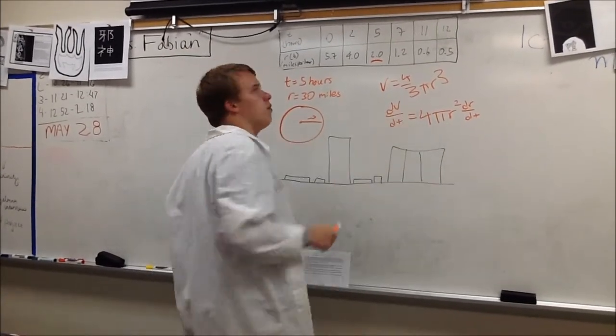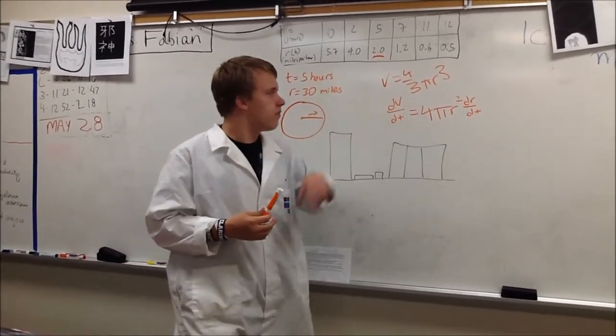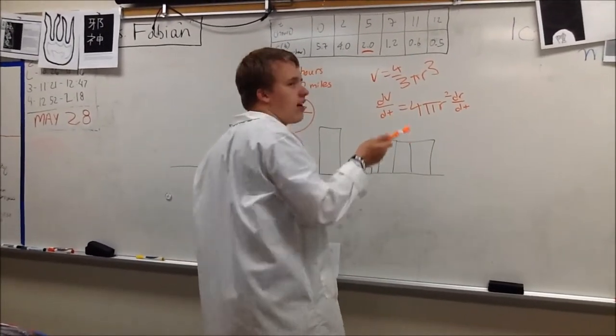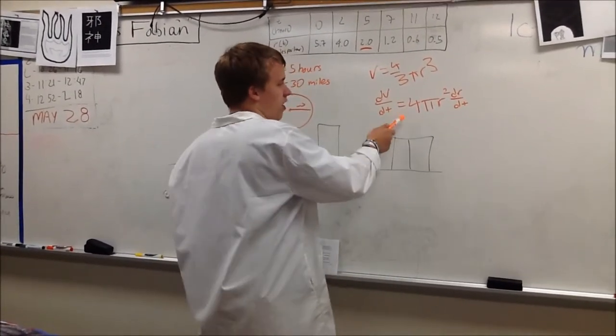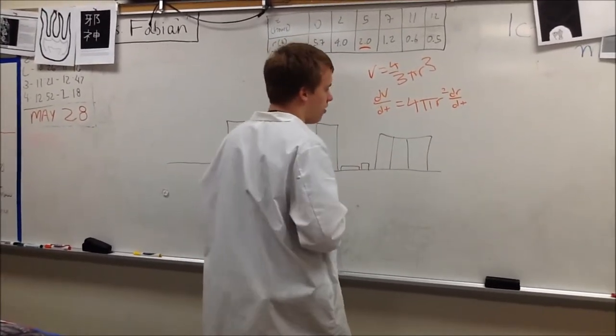So we know that the volume of a spherical shape is 4 thirds pi r cubed. So if we take the derivative of that and find the rate of change, it will be 4 pi r squared times dr dt.